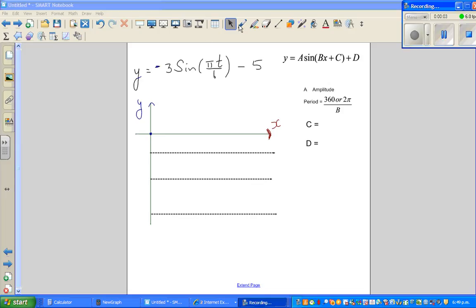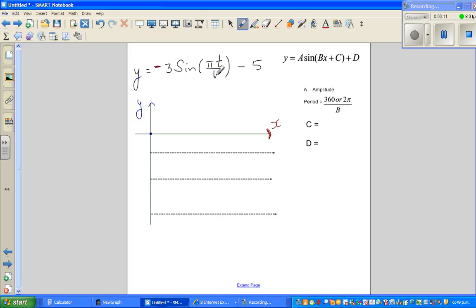Let us see how to graph this equation y equals minus 3 sine pi t over 6 minus 5. Whenever you have pi, they're asking you to draw in radians, so regarding radians you should know this rule: 360 degrees is 2 pi radians.